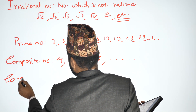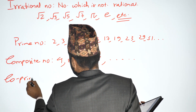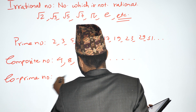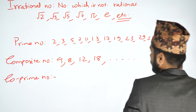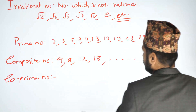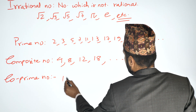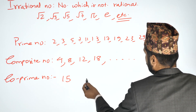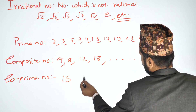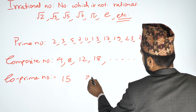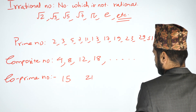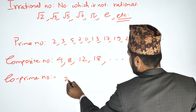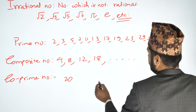How many prime numbers are there below 15? How many prime numbers are there below 25? You should be able to identify these counts quickly.